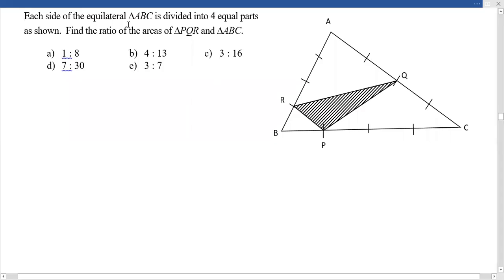Each side of the equilateral triangle ABC is divided into four equal parts. As shown in the figure, you need to find out the ratio of the area of triangle PQR with triangle ABC.